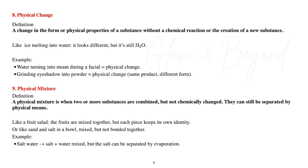Number nine: physical mixture. A physical mixture is when two or more substances are combined but not chemically changed — they can still be separated by physical means. Like a fruit salad, where each piece keeps its own identity, or sand and salt in a bowl — mixed but not bonded together. Example: salt water — salt and water mixed, but the salt can be separated by evaporation.